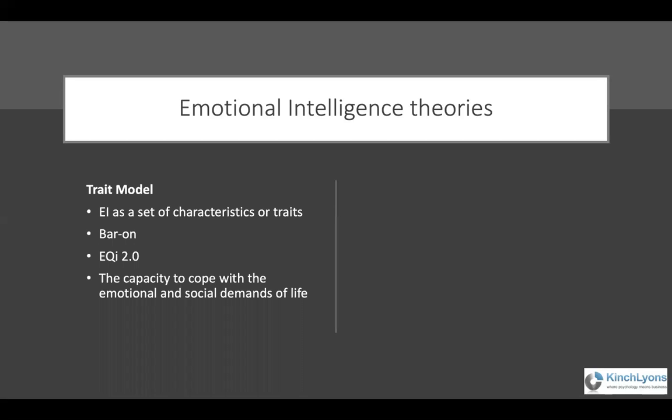On the one side, we have the trait model where emotional intelligence is seen as a set of characteristics or traits. A lot of that is based on the work of Reuven Bar-On, the psychologist. The EQI 2.0 that some of you will be familiar with is based on this model — the capacity to cope with the emotional and social demands of life. Traits like optimism, emotional self-awareness, emotional self-expression, and stress management are all part of that model.